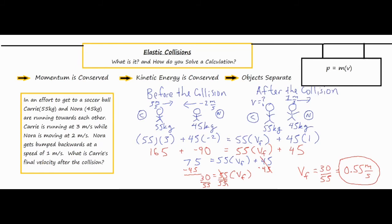Carrie was initially running at three meters per second to the right, and she continued running in that same direction, meaning she had enough momentum to keep going. But her momentum definitely decreased because she transferred some of it onto Nora, causing Nora to lose all of her negative momentum and flip into the positive direction, giving her a momentum of 45 times 1 in the positive direction.